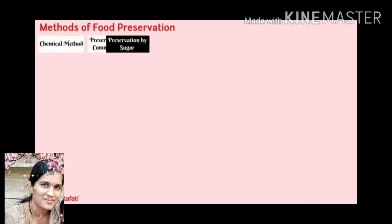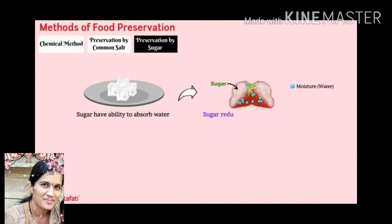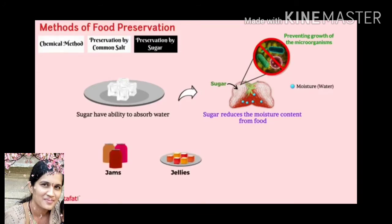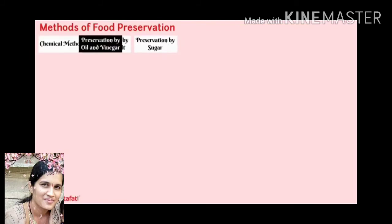Preservation by sugar: sugar has the ability to absorb water. It absorbs the water content and reduces moisture, which prevents the growth of microorganisms. So sugar is used in jams, jellies and squashes to preserve them for a long time.